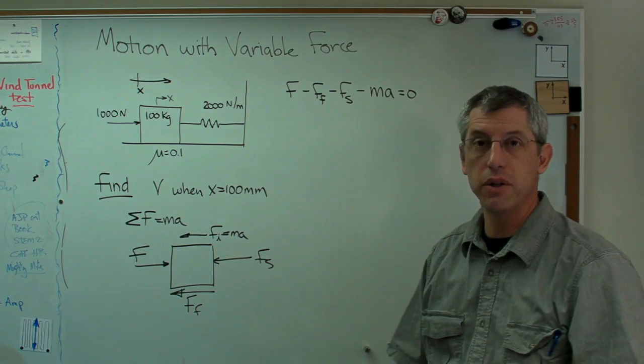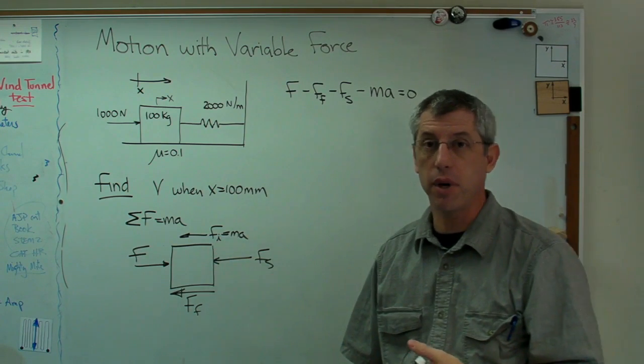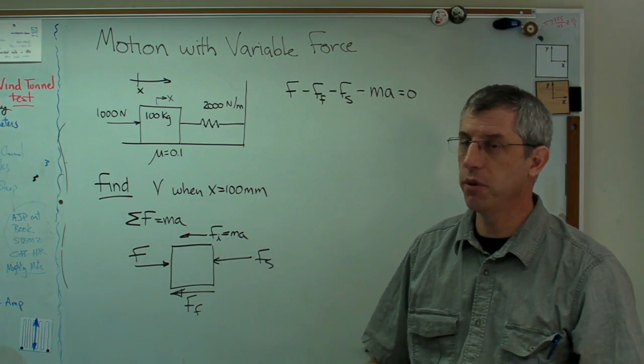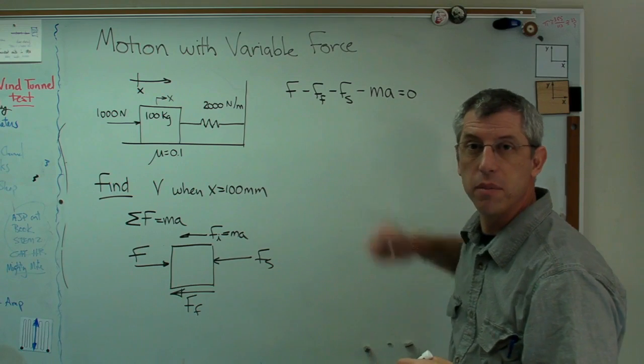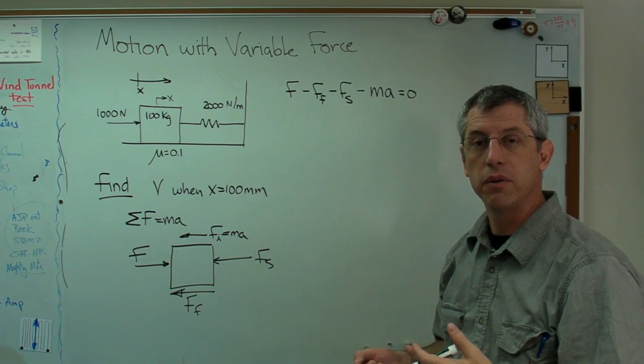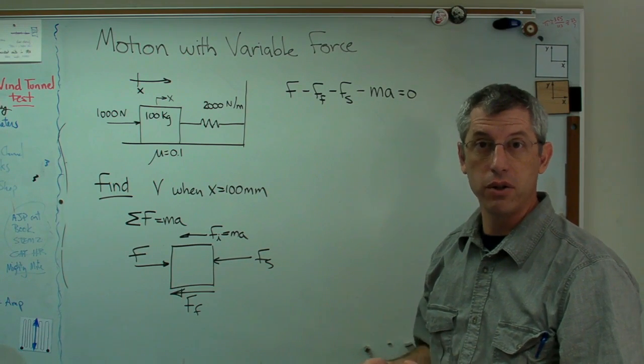So that's what I'm doing here is I'm summing all the forces, including this ma term, and I'm setting them all equal to zero. If you do it this way, it makes a dynamics problem look just like a statics problem. Sum of the forces equal zero. Just one of them happens to be something that looks like a force and arises due to acceleration.